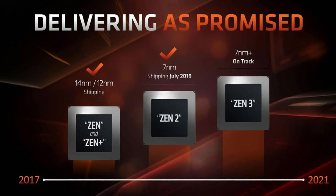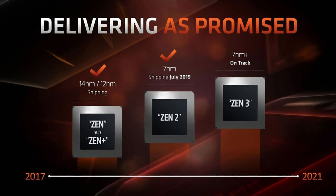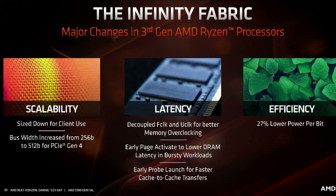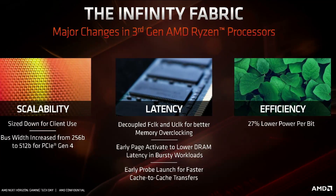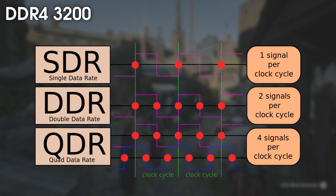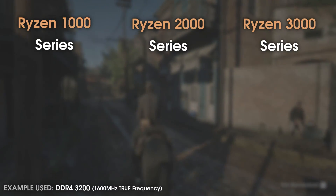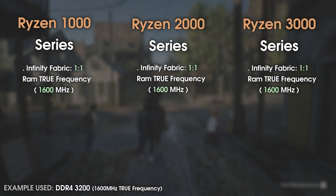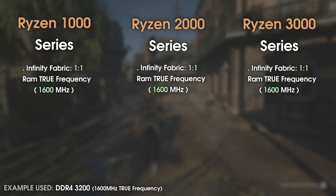Ryzen CPUs were launched back in 2017 and brought a new architecture which included an evolution of HyperTransport called Infinity Fabric. The Infinity Fabric's frequency is directly connected to your RAM frequency. For example, DDR3200 — DDR stands for Double Data Rate — means your RAM's true frequency is 1600MHz. In all Ryzen CPUs, the Infinity Fabric operates at half your RAM frequency, or your RAM's true frequency, so the ratio would be 1:1.